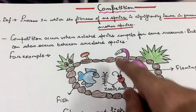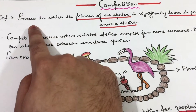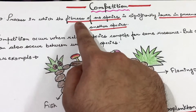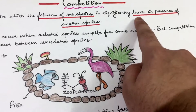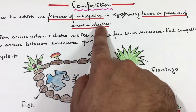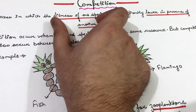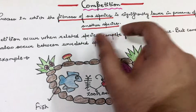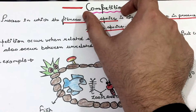So what is competition? Competition is a process in which the fitness of one species is significantly reduced in the presence of another species.